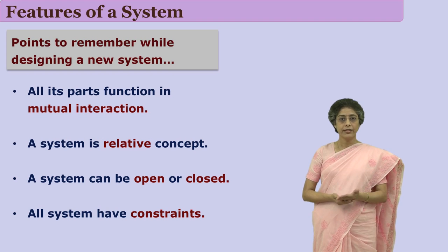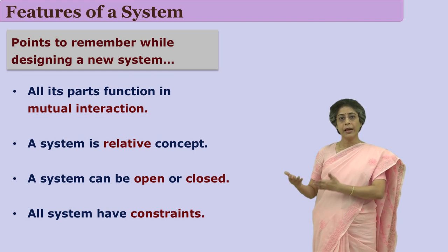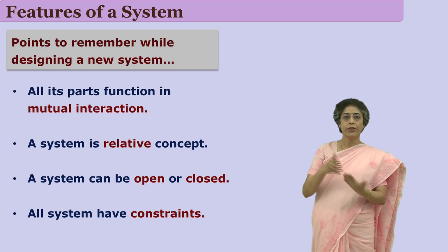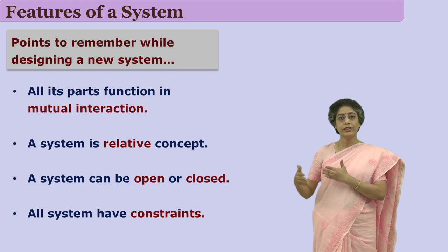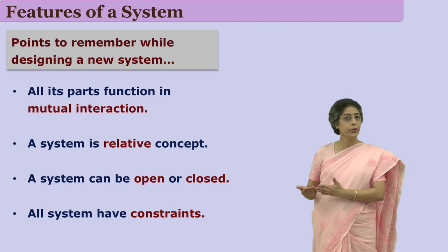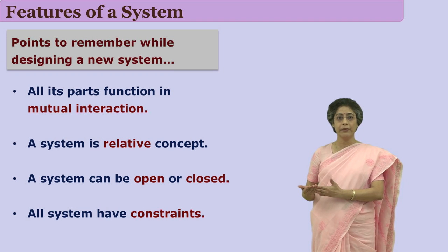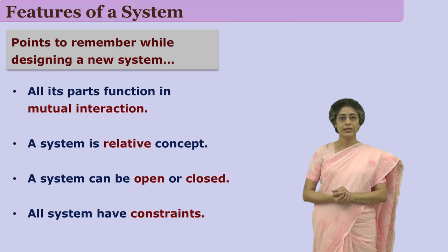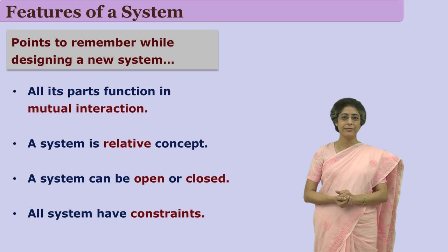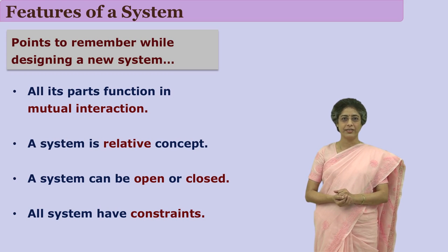Open systems necessarily have impacts of environments — some factors in the environment may affect systems. For example, in a school environment, even if a temple is not a part of that school system, if there is any function going on in that temple, the school surroundings may be disturbed.